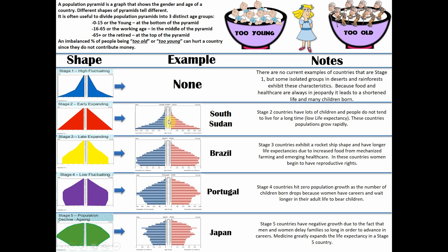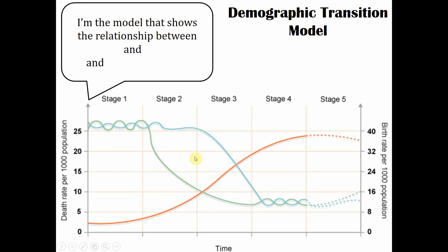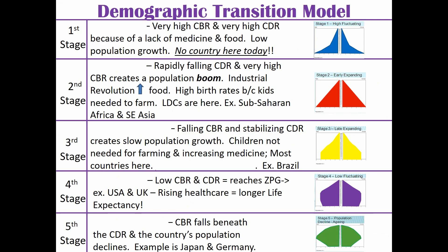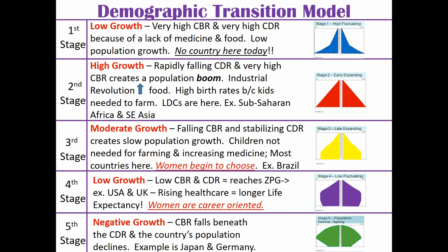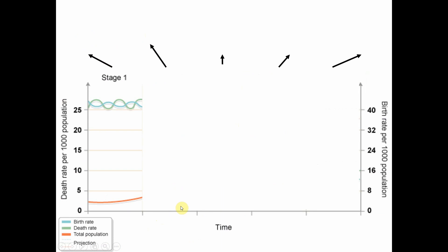So that's how we look at a population pyramid. Remember it's split - girls on the right side, boys on the left. Here are some examples of stage 2, 3, 4, and 5 countries with their notes. So how does that fit into this demographic transition model, which shows the relation between population, urbanization, and industrialization? Stage 1 has low growth. Stage 2 has explosive growth. Stage 3 has moderate growth. Stage 4 has low growth again. And then stage 5 has negative growth. We're going to look at each stage in order to understand this.